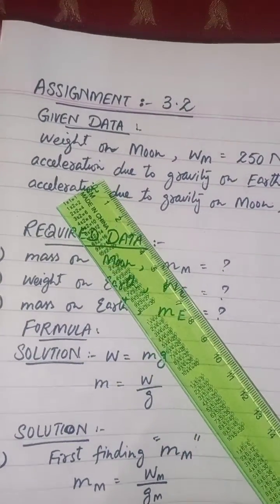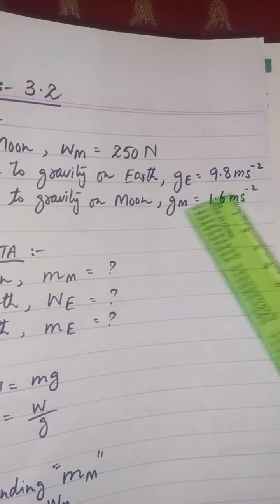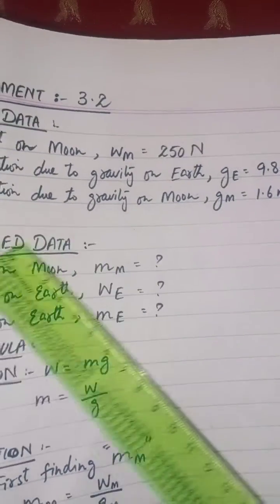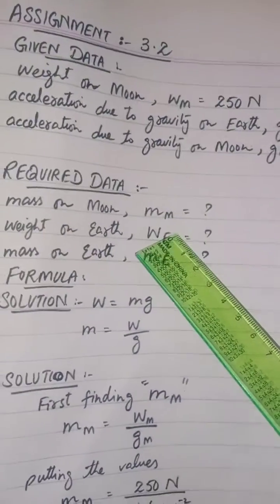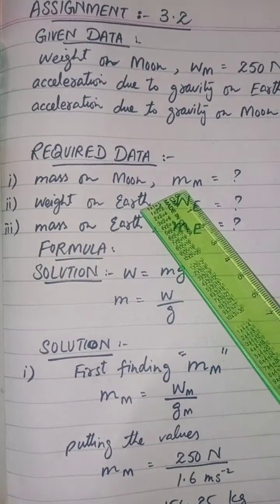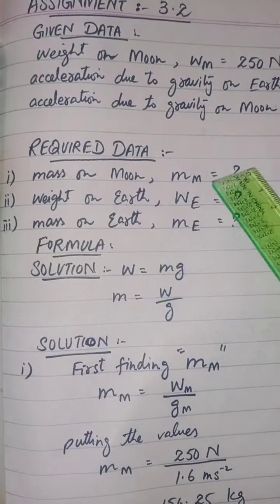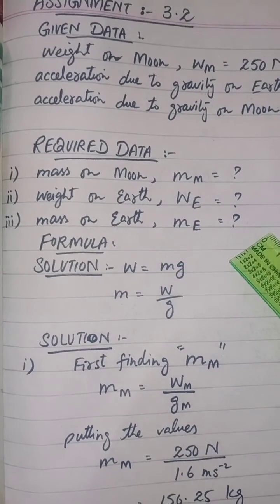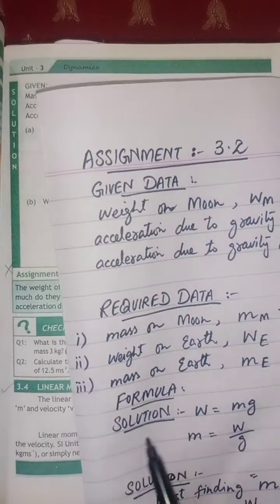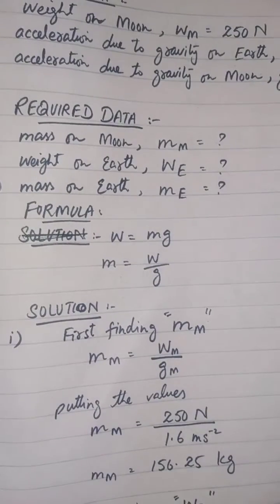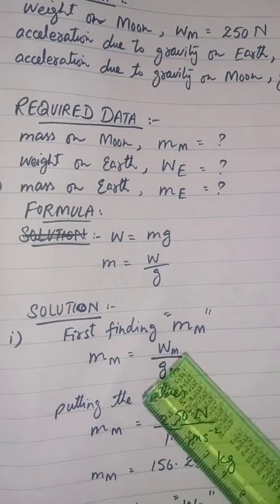The given data: weight on moon = 250 Newton, ge = 9.8 m/s², gm = 1.6 m/s². Required: mass on moon (mm), weight on earth (we), and mass on earth (me). Our formula is w equals mg, so m equals w divided by g.